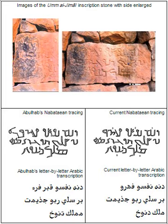The Nabataean alphabet is an abjad that was used by the Nabataeans in the 2nd century BC. Important inscriptions are found in Petra and the Sinai Peninsula.